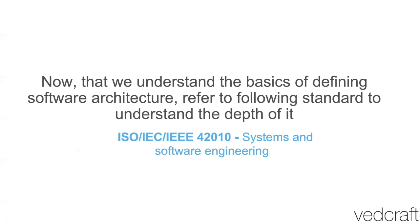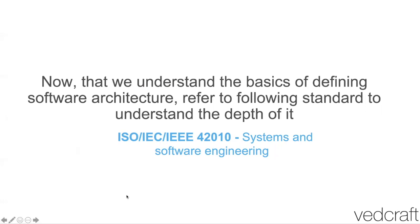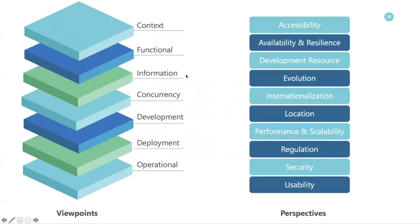Feel free to go and read the ISO 42010 specification. If you want to read a book, I recommend this book by Nick Krasinski and Ian Woods, which covers different elements of software architecture in great detail — I really loved this book. It covers different aspects including viewpoints and perspectives: what are the viewpoints through which you want to describe your architecture, and what perspectives ensure your architecture is well documented. There is no single magic bullet for defining software architecture — you can learn it iteratively and it's very contextual. Based on that context, you can always define and document software architecture.